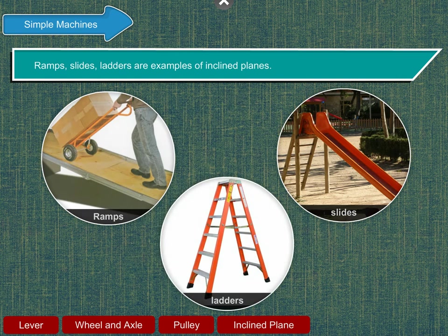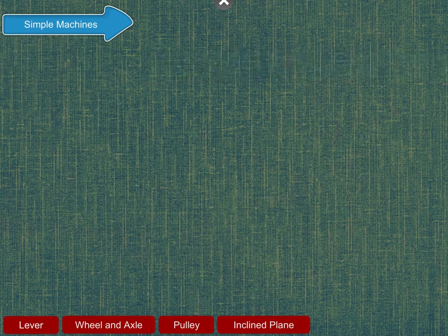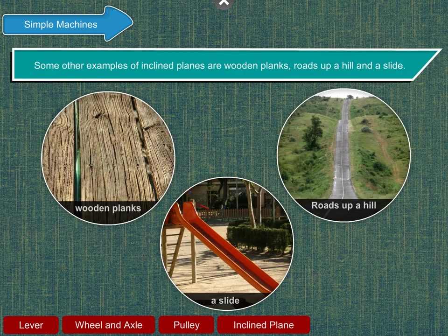Ramps, slides, and ladders are examples of inclined planes. Some other examples of inclined planes are wooden planks, roads up a hill and a slide.